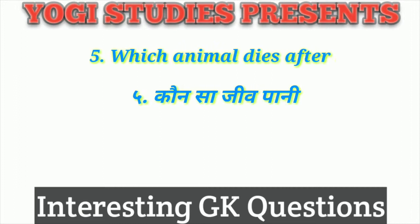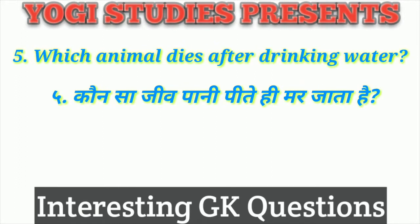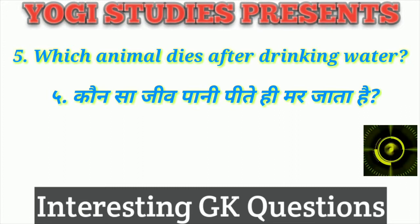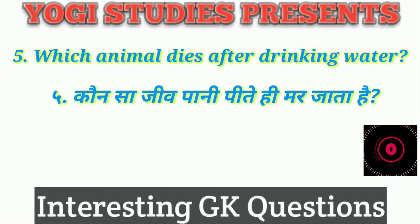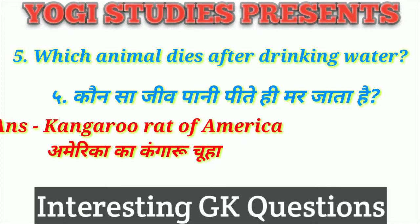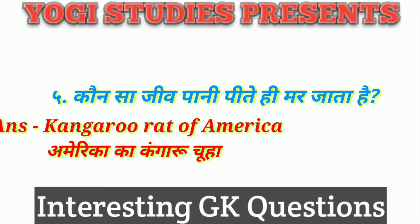Question number five: Which animal dies after drinking water? Kaun sa jeev paani peete hi mar jaata hai? Paani peete hi jo mar jaata hai uska naam hai America ka Kangaroo Chuha — the American Kangaroo Rat.